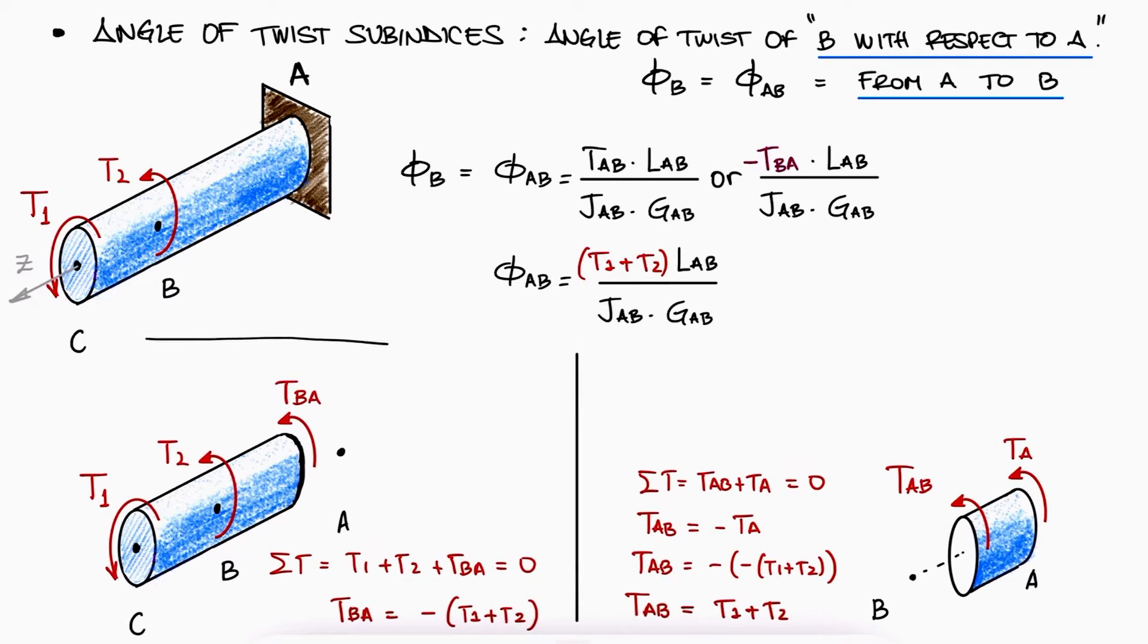Notice that calculating phi BA, which is the angle of twist from B to A or the angle of twist of A would not require to find a reaction torque at A, so it's slightly faster to find TBA with a cut from C and use TBA in the phi BA expression to find that angle.